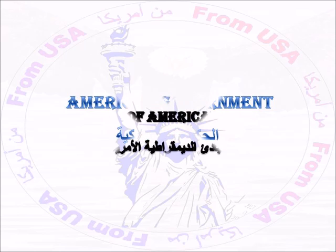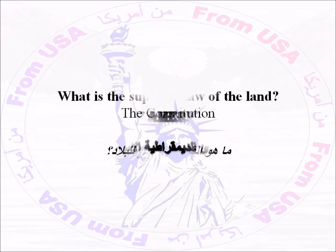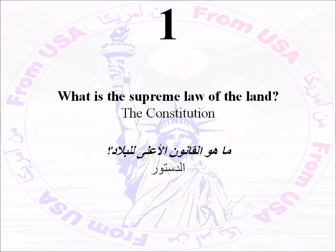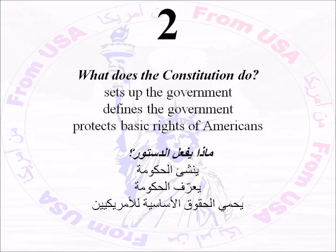American Government Part A. Number One: What is the supreme law of the land? The Constitution. Number Two: What does the Constitution do? It sets up the government, it defines the government, and it protects basic rights of Americans.